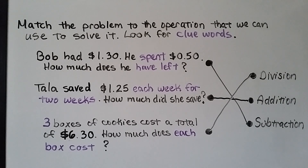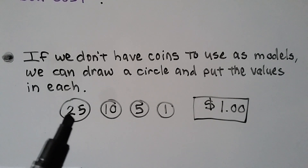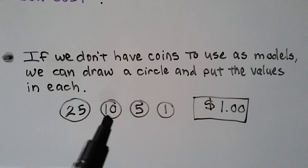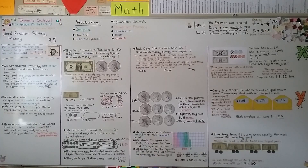Sometimes you have to read a word problem more than once to really understand what it's asking, and that's okay. If we don't have coins to use as models, we can draw circles with values inside: 25 for a quarter, 10 for a dime, 5 for a nickel, 1 for a penny, or a rectangle labeled 'dollar' for dollar bills. In our next lesson, 9.6, we'll add tenths to tenths, hundredths to hundredths, and even tenths to hundredths. Have a really nice day — keep trying, and see you next time!